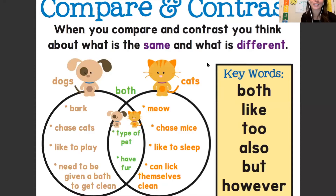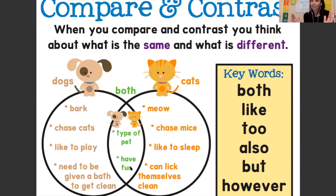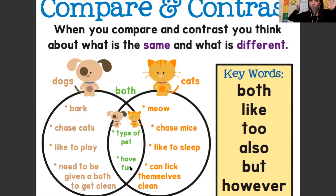Compare and contrast. When you compare and contrast, you think about what is the same and what is different. Here we're comparing dogs and cats. Remember, in the middle is where we write what's the same about both things — both animals or both stories. On the sides is what is unique to each one, what is not the same.